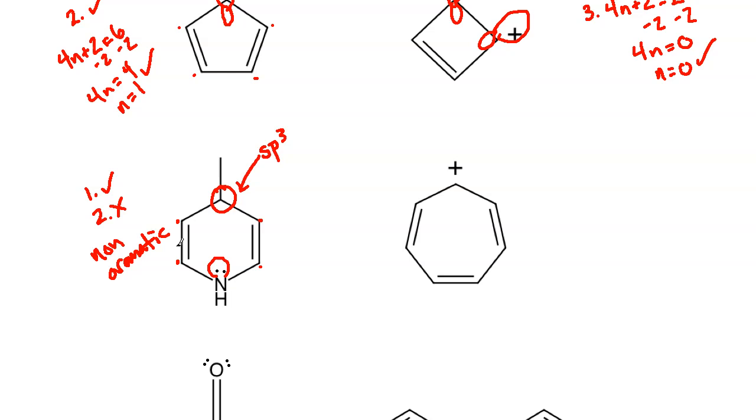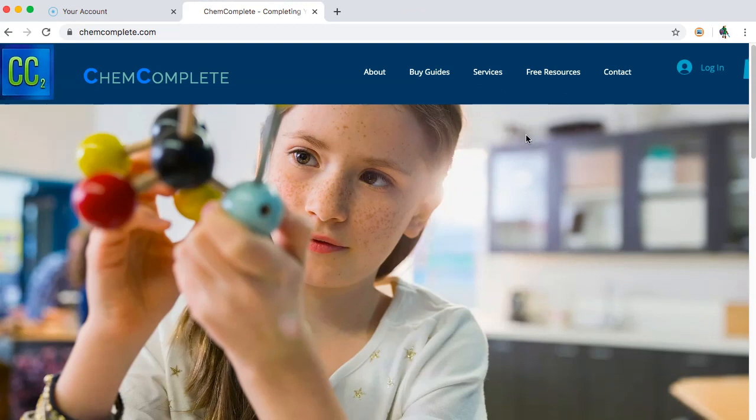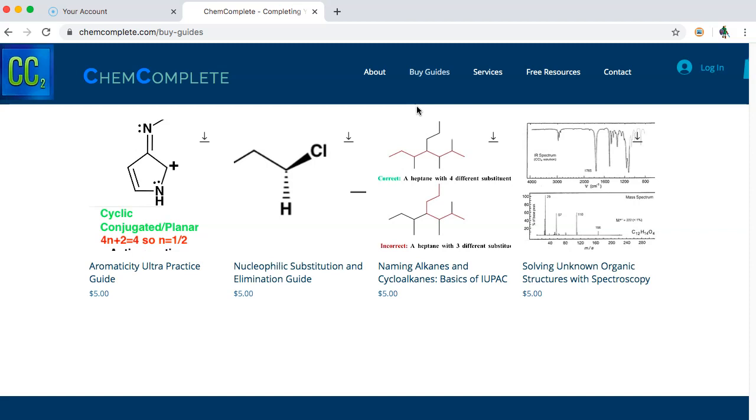So about halfway through here, because there's a total of six examples, I want to just briefly mention, if you head over to chemcomplete.com and you go to the guide section up in the menu bar, and I'll have a link for this in the description, we now have a conjugation practice guide. There are 48 practice problems, just like we're doing in these video lectures. It's only $5 for the guide. It has a full answer key, and you will get tons of practice on ranking aromatic systems, nonaromatic, and antiaromatic systems. So go over to ChemComplete and check it out. It's only $5, and it does help support the channel, so we can keep bringing you guys these free walkthroughs.